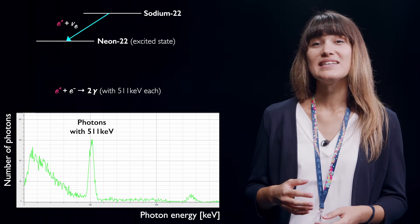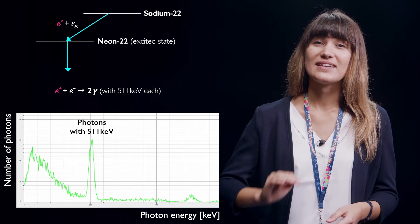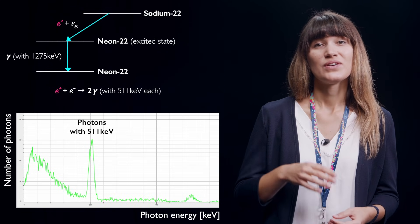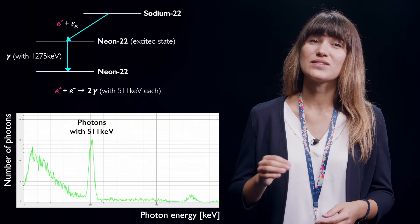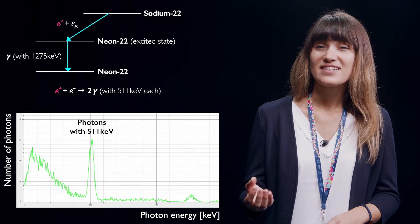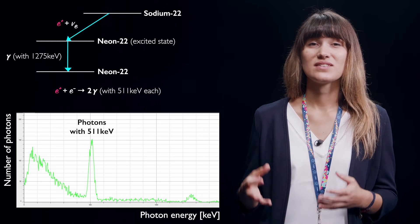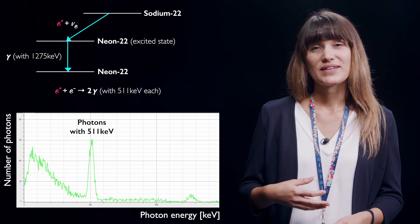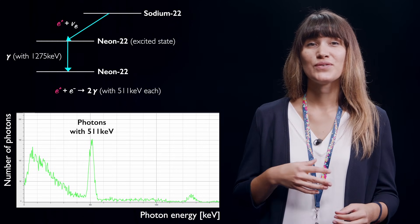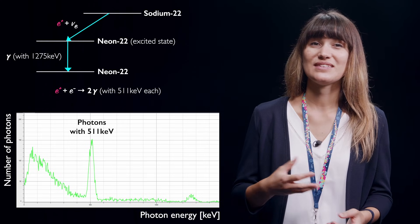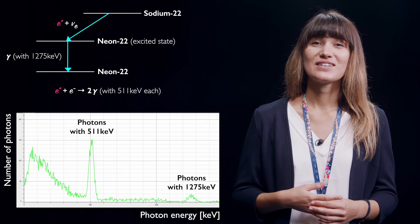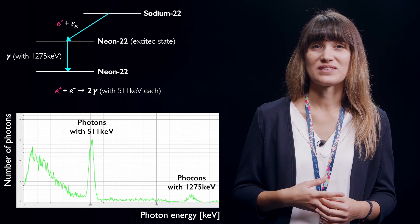Moreover, the neon passes from the excited state into the ground state by emitting a photon with an energy of 1,275 keV. The scintillation detector detects these photons as well. Thus, we can observe a number of photons with an energy of around 1,275 keV — this is the small peak on the right-hand side of the output diagram.